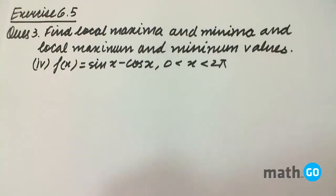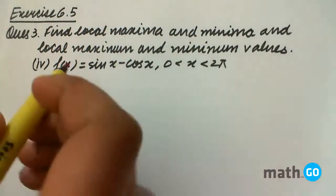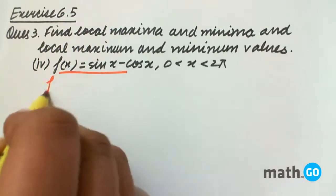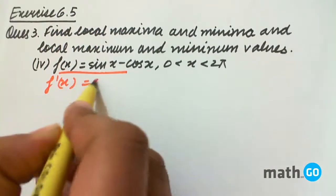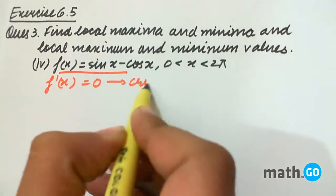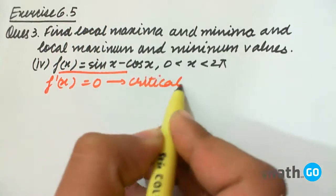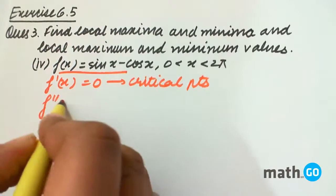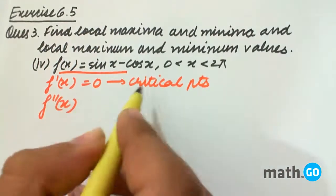Exercise 6.5, question number three. It says find local maxima and minima and local maximum and minimum values. For finding local maximum and minima, what do we do? We are given f(x), we find f'(x) and keep it equal to zero to get the critical points.